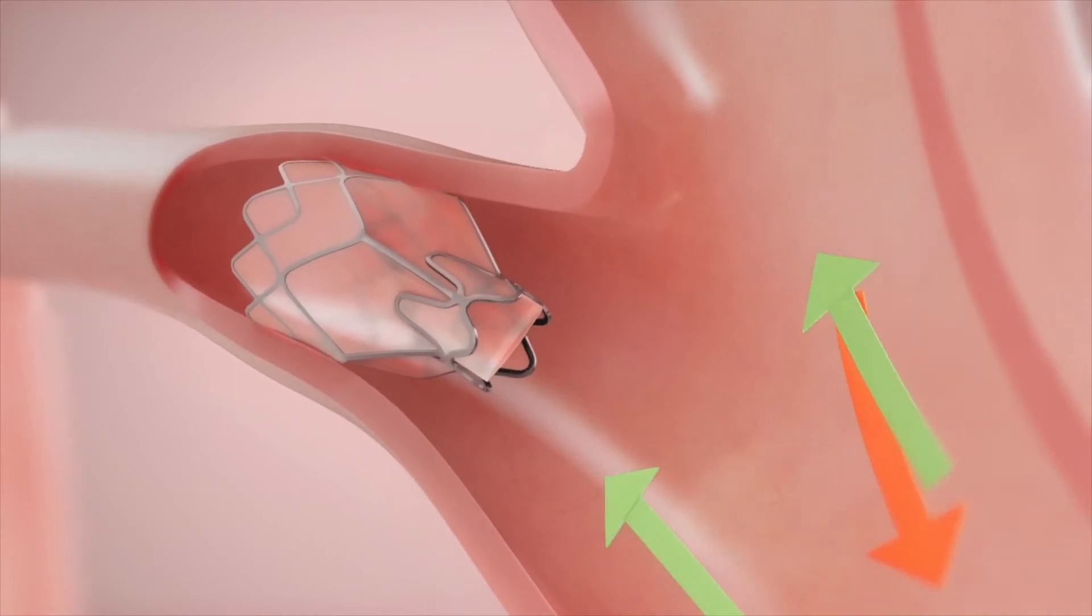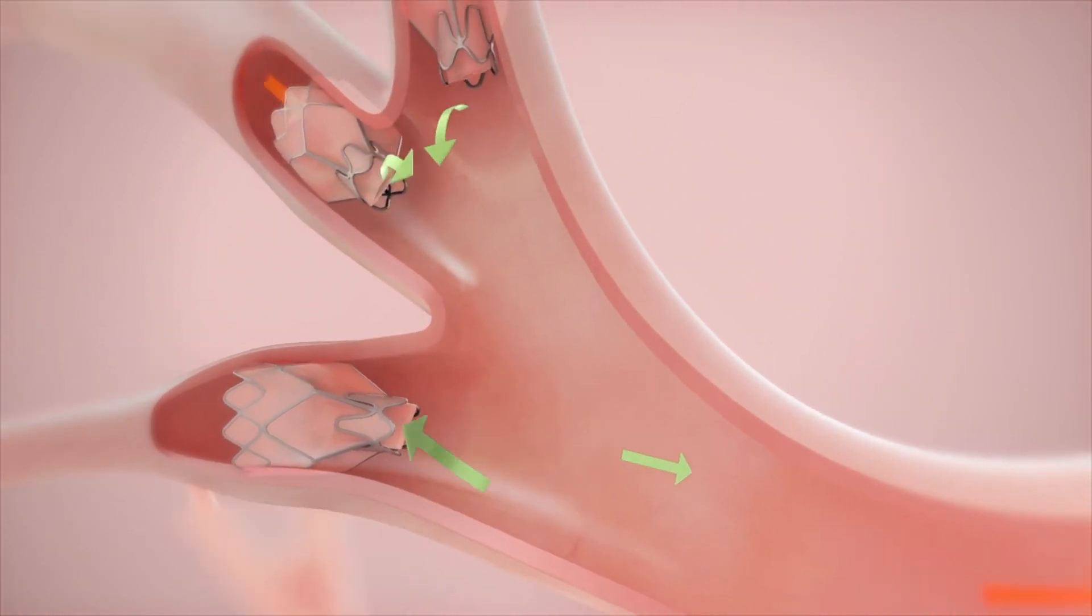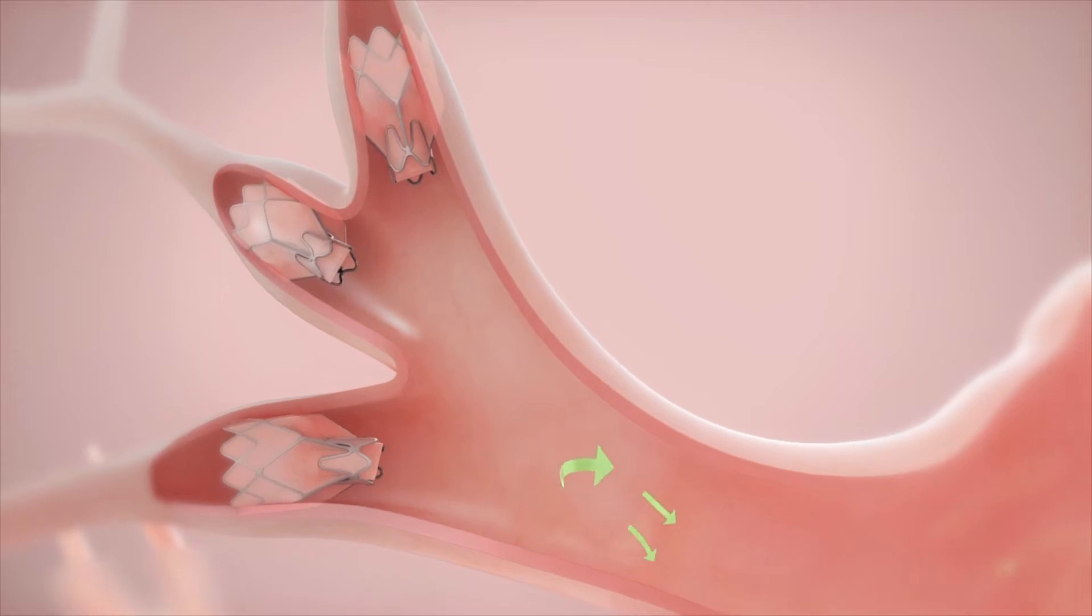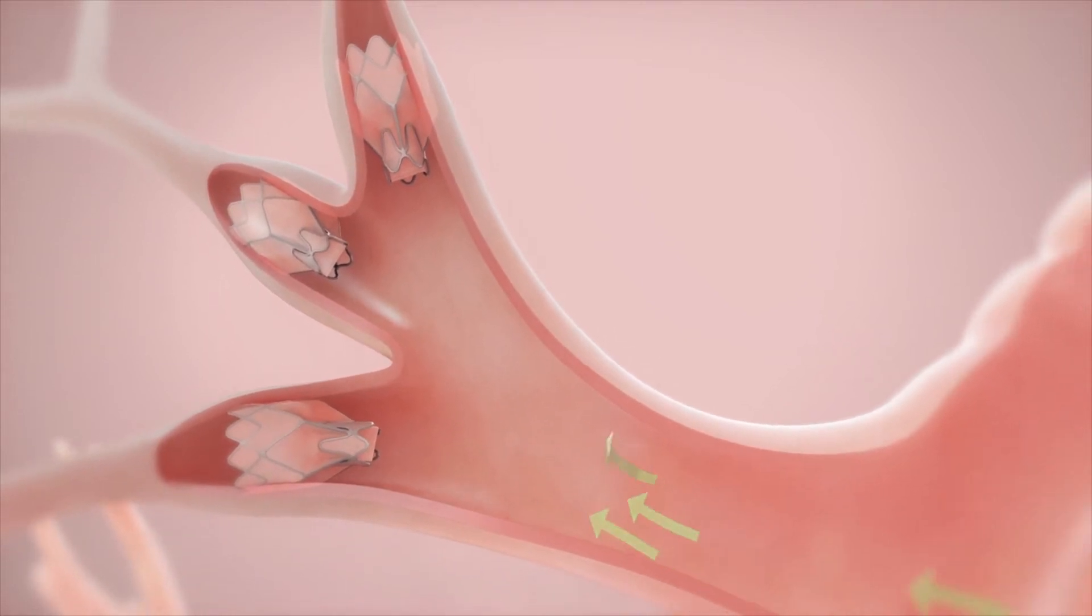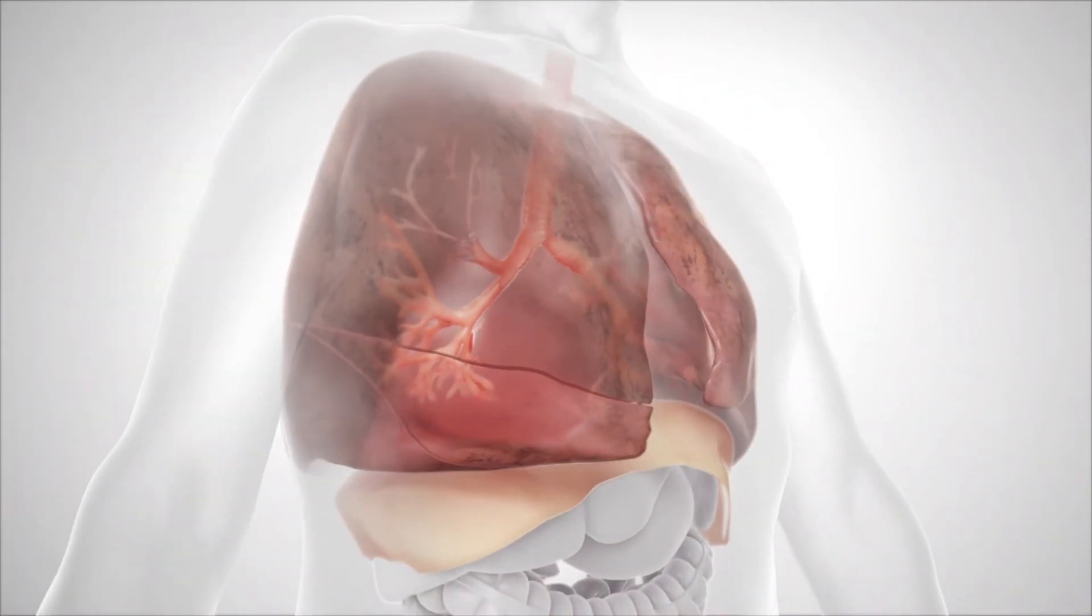Valves may be placed at the lobar, segmental, or subsegmental levels dependent on the airway anatomy. Trapped air in the treated lobe escapes through the Zephyr valves until the lung volume of the treated lobe is reduced. The valves can be removed and replaced if needed.